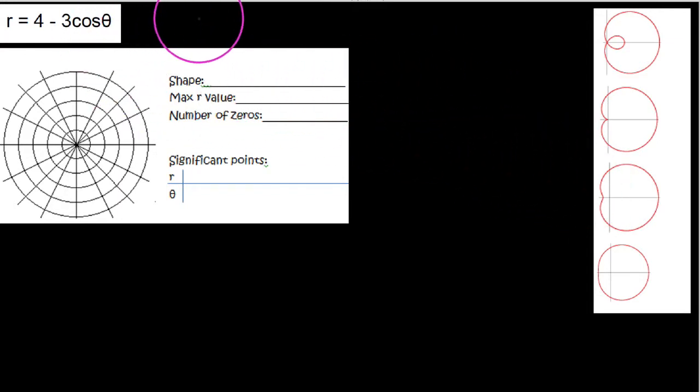So let's go ahead and kind of review what we talk about when we refer to limaçons. We're saying any function of the form a plus or minus b times the cosine or sine of theta. I'm just going to write the cosine of theta. But we say these would make these graphs that you see here on the right.